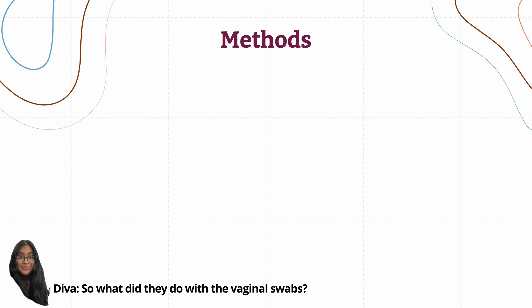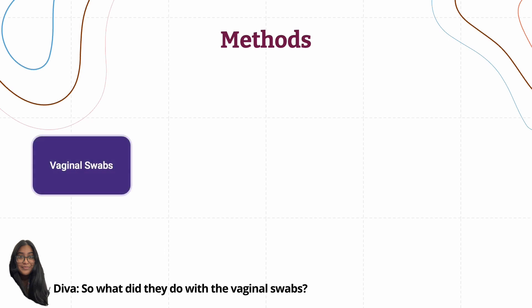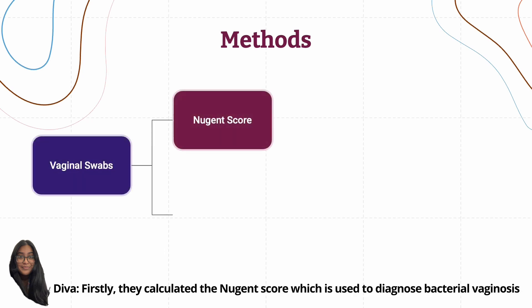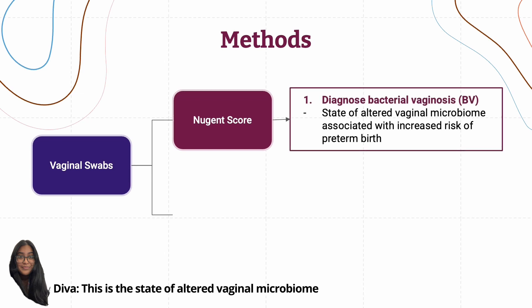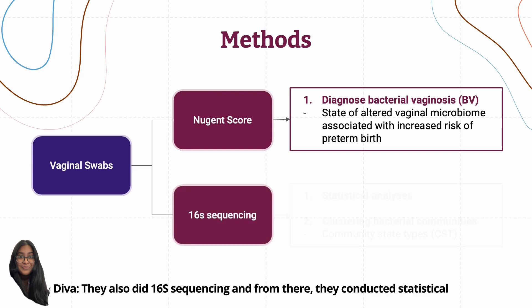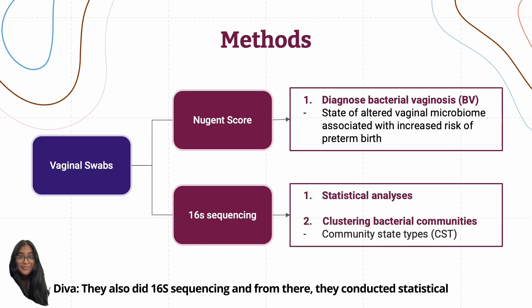What did they do with the vaginal swabs? Firstly, they calculated the Nugent score, which is used to diagnose bacterial vaginosis — the state of altered vaginal microbiome associated with increased risk of preterm birth. They also did 16S sequencing and from there, they conducted statistical analysis and clustering of bacterial communities into community state types.